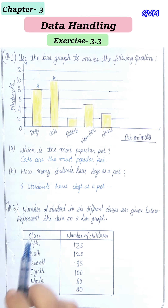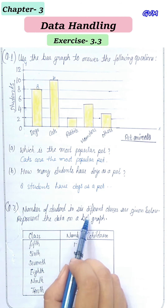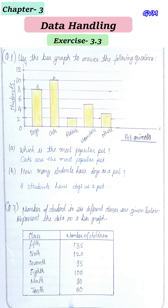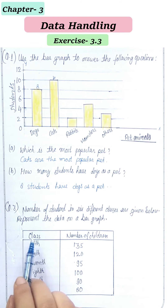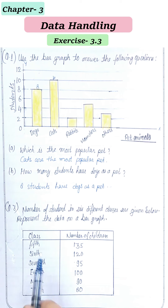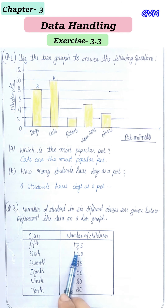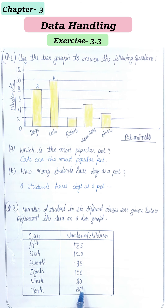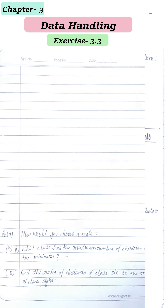Next, question number 3: the number of students in six different classes are given below — represent the data on a bar graph. We have a table with different classes and their student counts: Class 5 has 135, Class 6 has 120, Class 7 has 95, Class 8 has 100, Class 9 has 90, and Class 10 has 80 students.